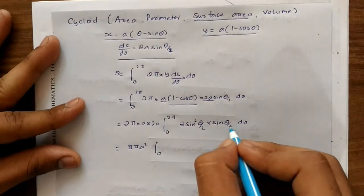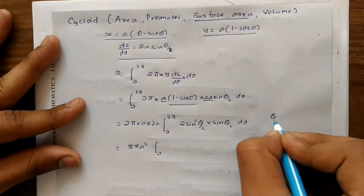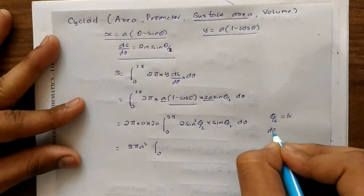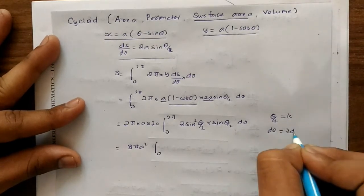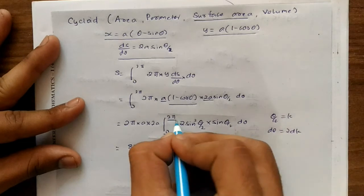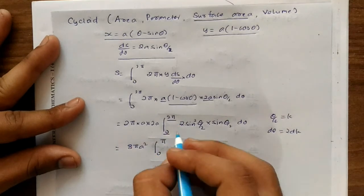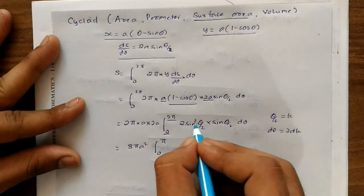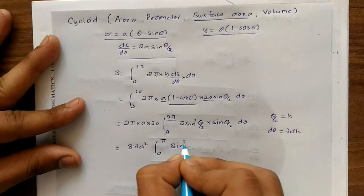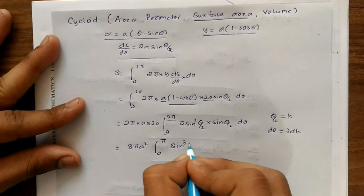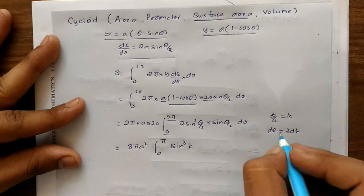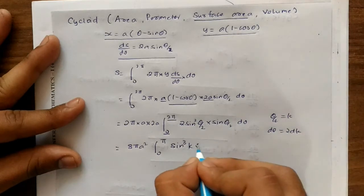Now what we will do is the same substitution. If θ/2 is equal to k, then dθ is equal to 2dk, and the limits will change from 0 to π. So from 0 to π, sin²(θ/2)·sin(θ/2) becomes sin³k, and we have to take the factor of 2 also, so dθ = 2dk.